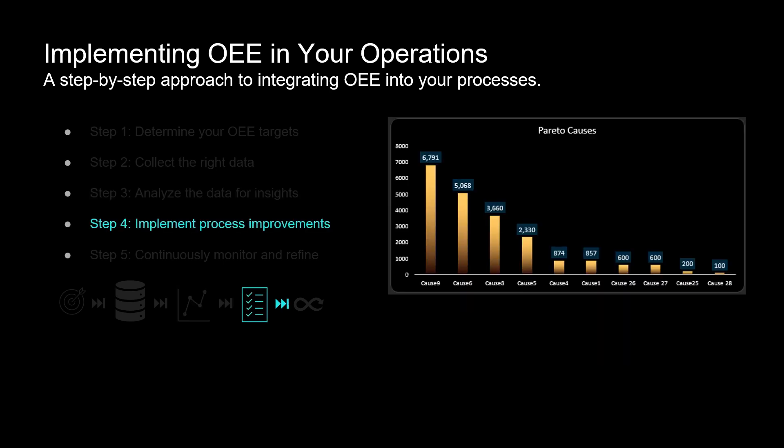Step 4: implement improvement actions focusing on the main causes of downtime and scraps to achieve the best results. Utilize the insights gained from your analysis to develop targeted strategies for optimizing production efficiency and minimizing losses.